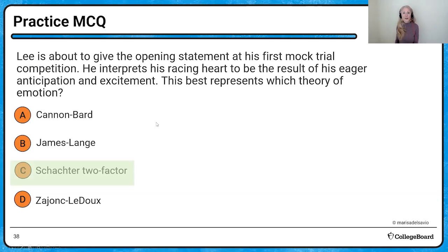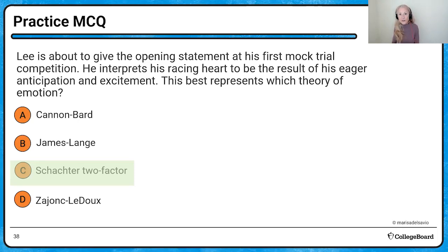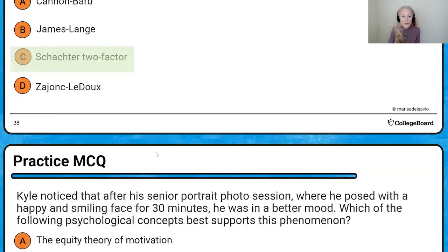Practice question: this is the Schachter two-factor theory. We have a racing heart, and the cognitive appraisal of that physiological response is what we talked about with Schachter-Singer. There's a stimulus, a physiological arousal, and then we appraise that arousal. In this case, he interprets his racing heart to mean he's eager — anticipating the excitement of giving his first opening statement.